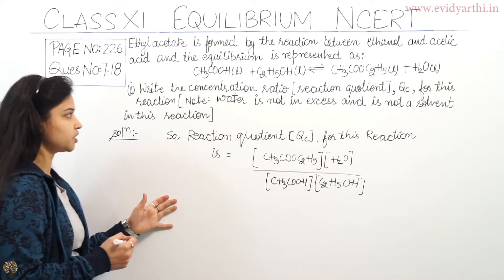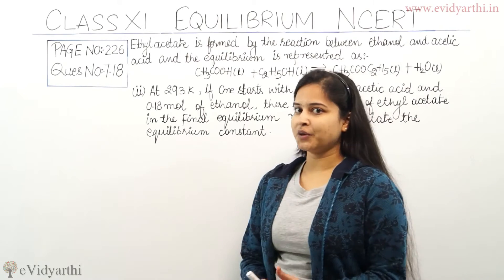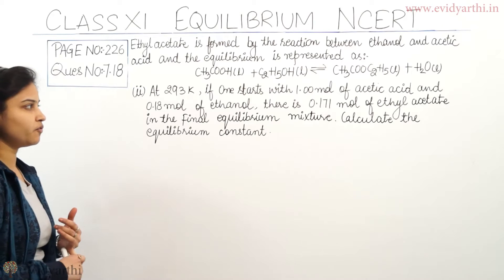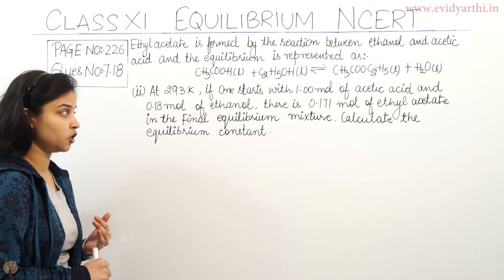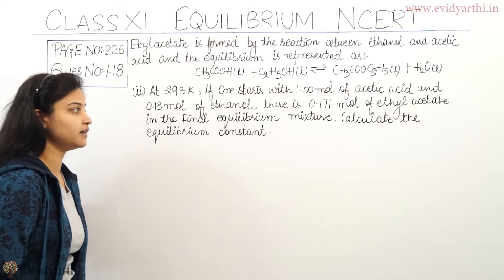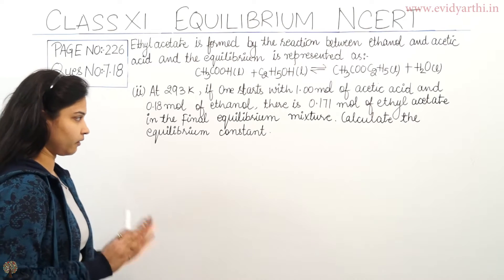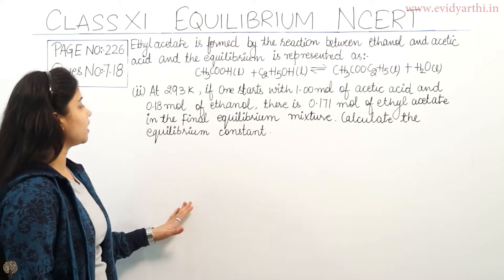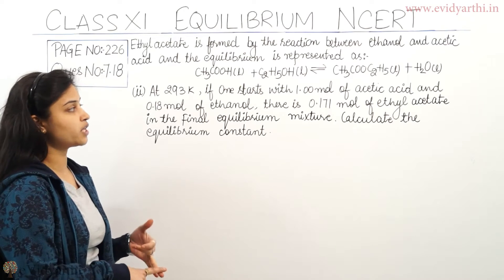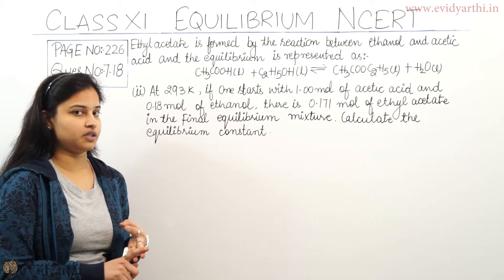That was the first part of the question. Now we move on to the second part. At 293 Kelvin, if one starts with 1 mol of acetic acid and 0.18 mol of ethanol, there is 0.171 mol of ethyl acetate in the final equilibrium mixture. We need to calculate the equilibrium constant Kc.